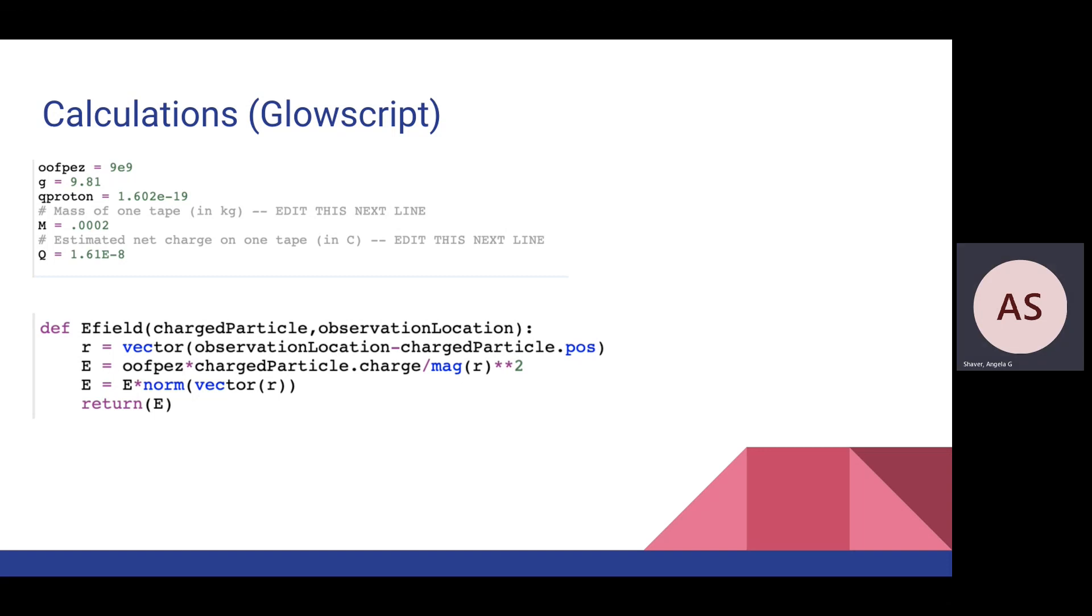Moving on to the GlowScript model, we started by entering the constants, shown on the top half of this slide. The bottom half shows the GlowScript code used to determine the electric field on each individual point charge.